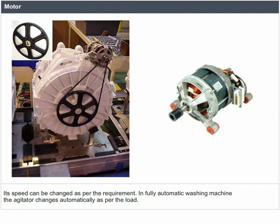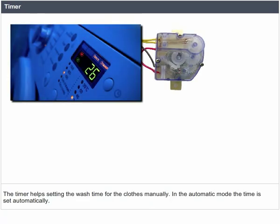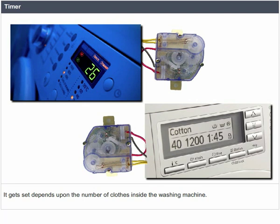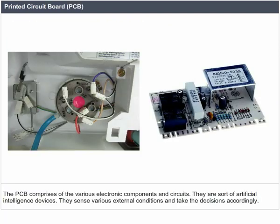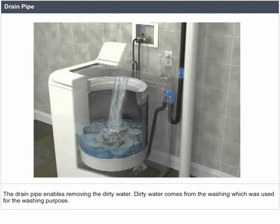In a fully automatic washing machine, the agitator changes automatically as per the load. The timer helps set the wash time for clothes manually; in automatic mode, it is set automatically depending on the number of clothes inside the machine. The printed circuit board (PCB) comprises various electronic components and circuits; they are sort of artificial intelligence devices that sense external conditions and take decisions accordingly, also called fuzzy logic systems. The PCB calculates the total weight of clothes and determines the quantity of water and detergent required, as well as total time required for washing. The drain pipe enables removing the dirty water used for washing.